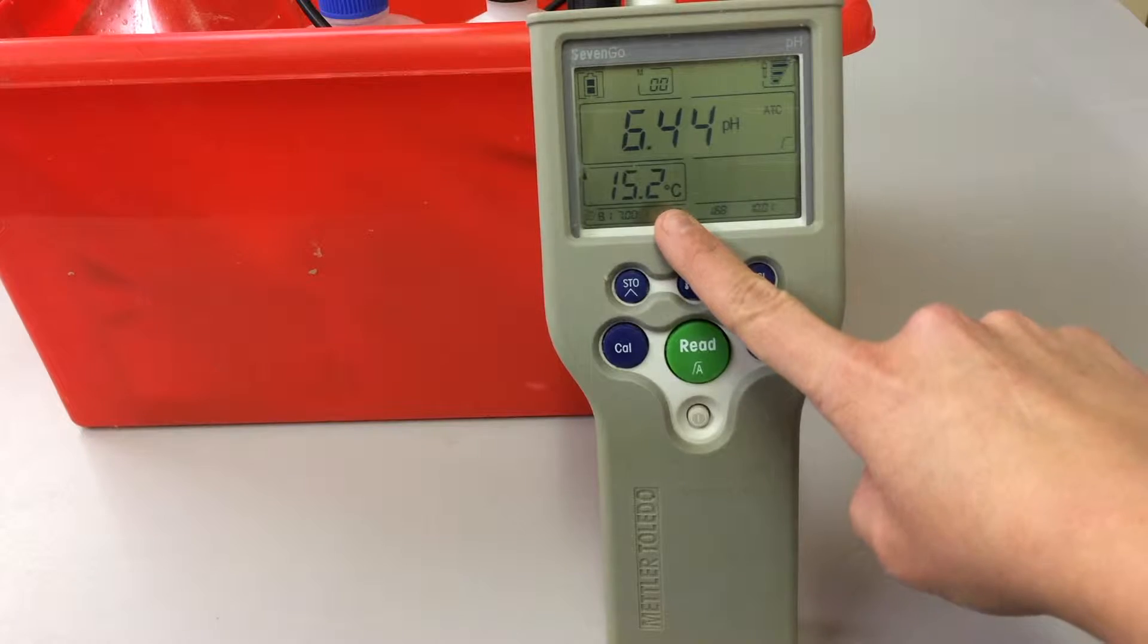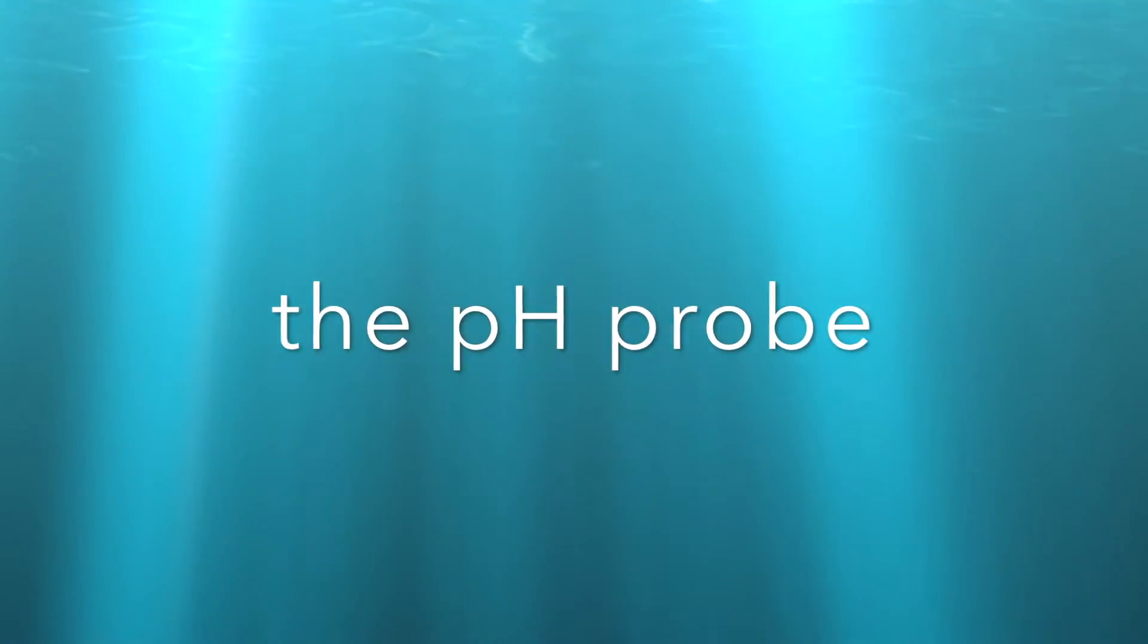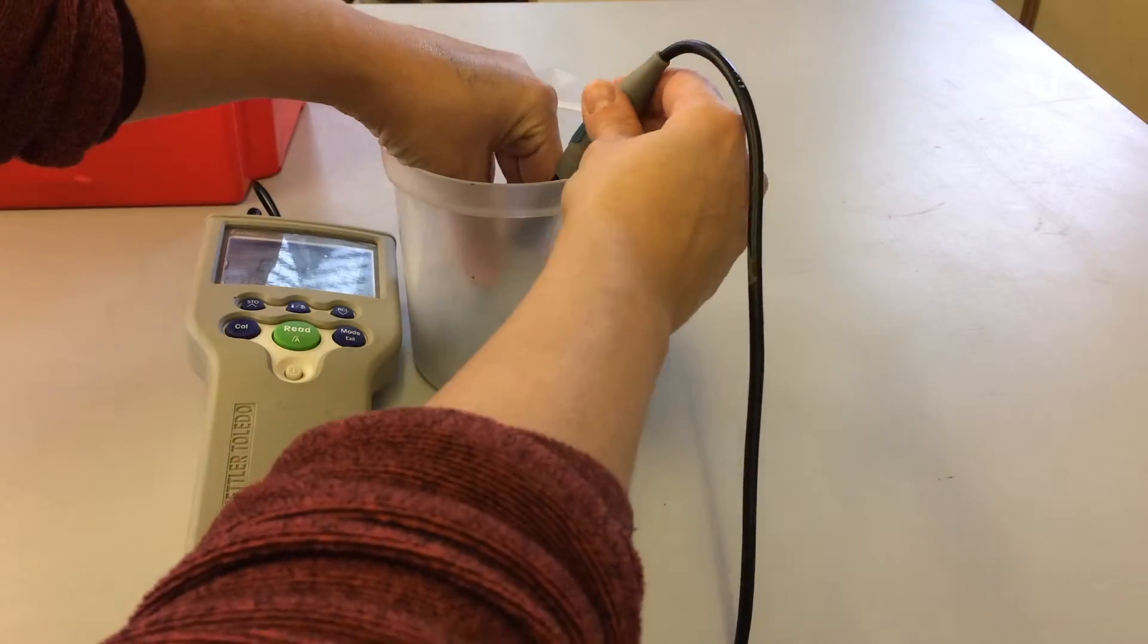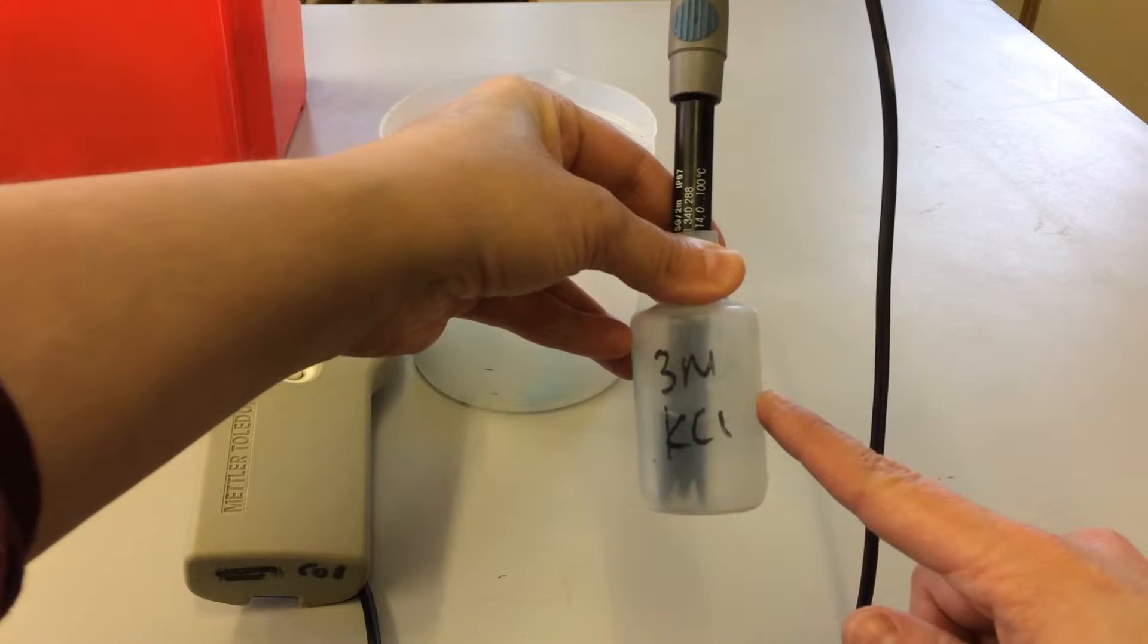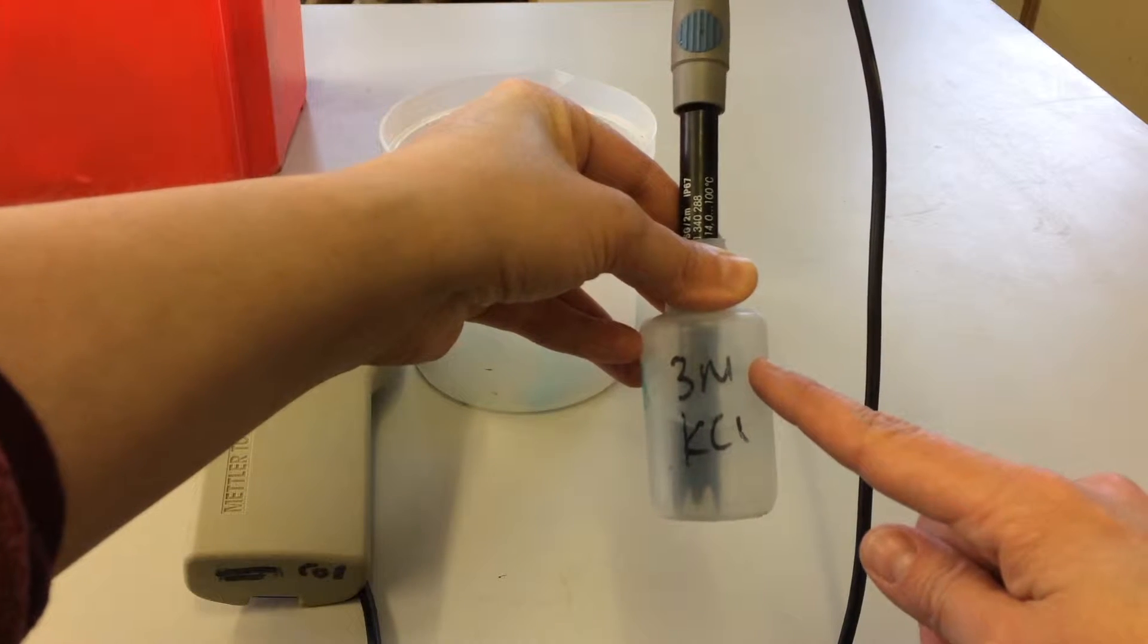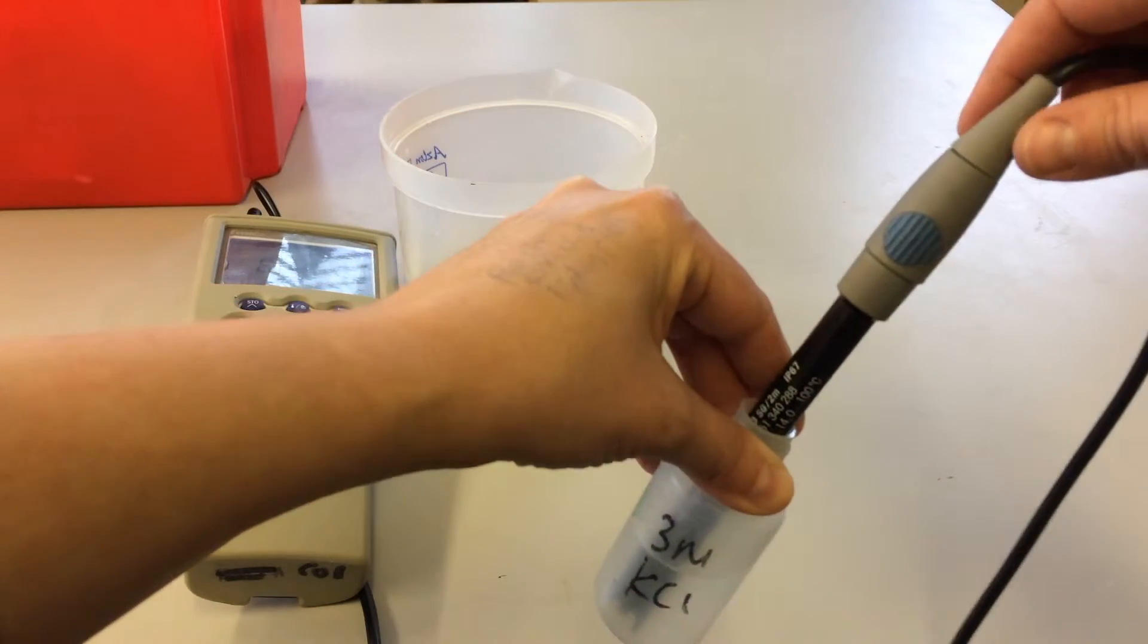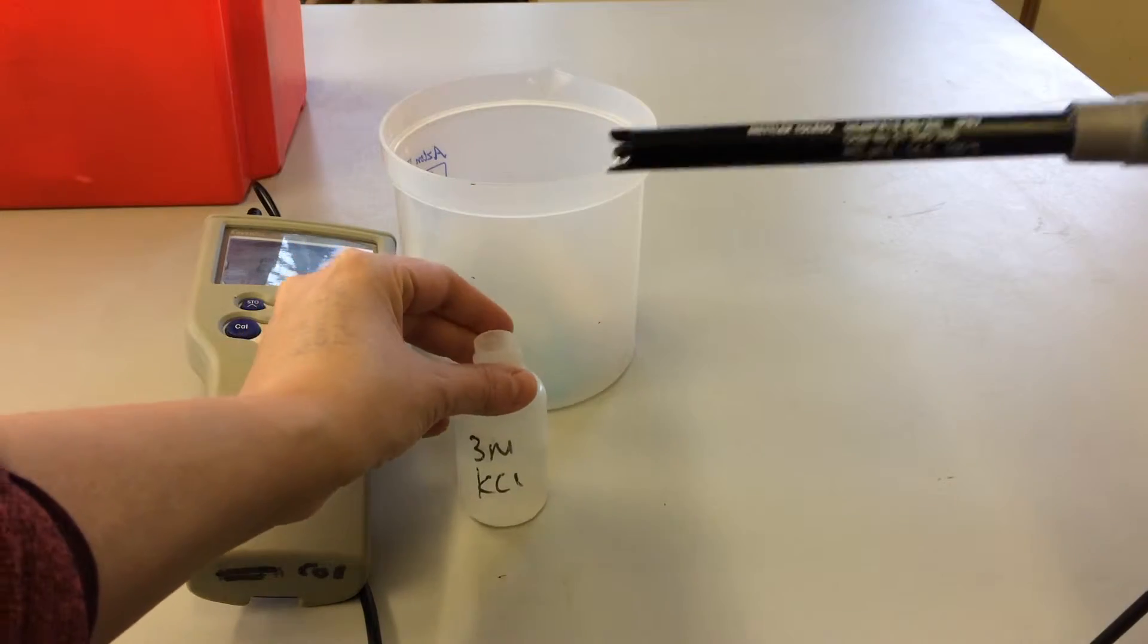Here we have the pH reading and then here we have a temperature to one decimal place. You'll notice that we keep our probe in a harsh salt, three molar potassium chloride. So take care of this. This does have an associated COSHH form, so make sure you're wearing gloves and goggles when you're handling this and make sure you rinse the probe after you've used it.